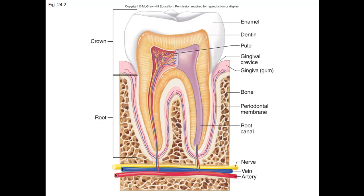Anaerobes and some other species will take glucose and not completely break it down — rather, they go through fermentation, breaking down glucose to form lactic acid. This lactic acid is what starts causing the erosion of the tooth enamel and dentin.